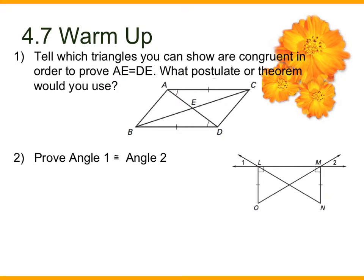In 4.7, we did extra practice on proofs and added CPCTC, which says that if the two triangles are congruent, then all of their pairs of corresponding parts are congruent. Number one says: tell which triangles you can show are congruent in order to prove that AE equals DE, and what postulate or theorem would you use? Your goal is to prove that this segment equals this segment. What information is there that you can use? The vertical angles — vertical angles are congruent.